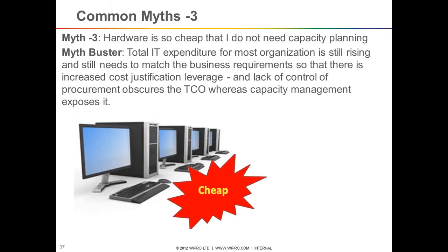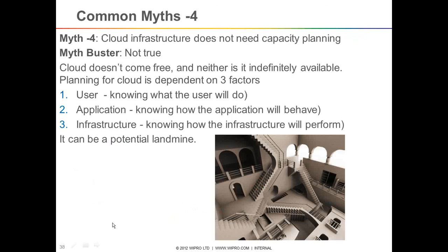Another myth: hardware is so cheap that you don't need capacity planning. Hardware is still not cheap, and there are significant operational expenses (OpEx) and capital expenses (CapEx) to consider — that's why cloud is emerging. The fourth myth: cloud infrastructure does not need capacity planning because you can just pay for more VMs. You still need capacity planning to balance the load. We have actually seen more problems in cloud than with physical servers, because physical servers are completely in our control while cloud VMs are not, and there are many parameters involved.